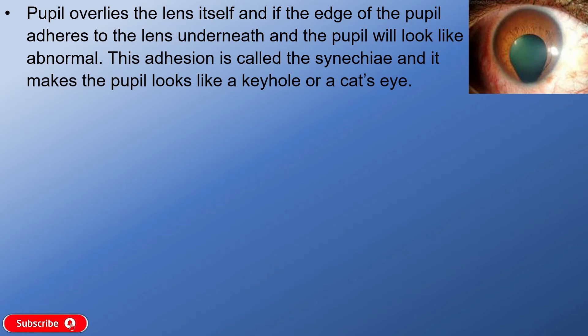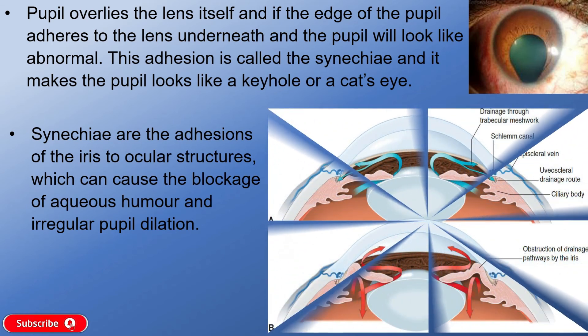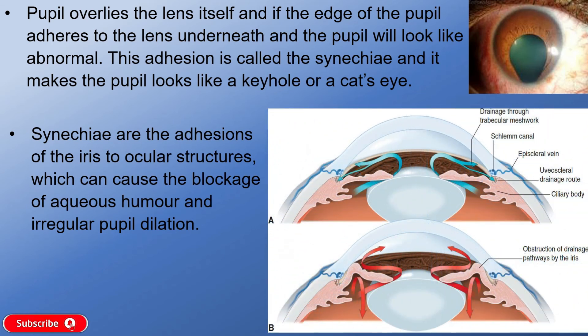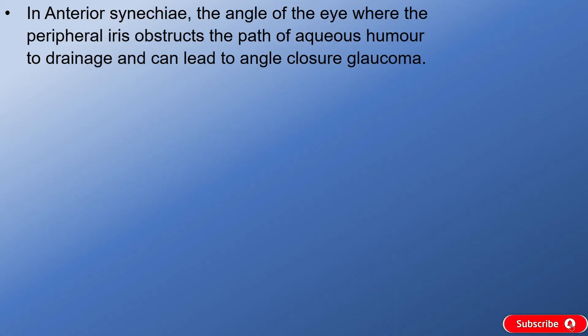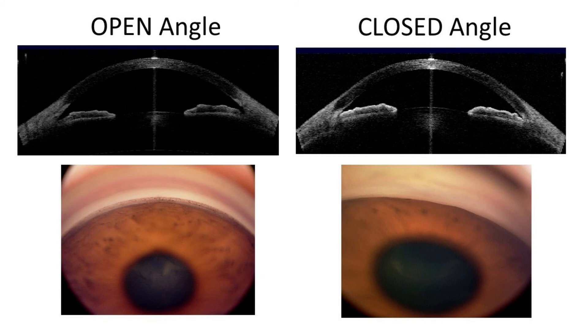Synechia are the adhesions of the iris to ocular structures which can cause the blockage of aqueous humor and irregular pupil dilation. In anterior synechia, the angle of the eye or the peripheral iris obstructs the path of the aqueous humor to drainage and can lead to angle-closure glaucoma.